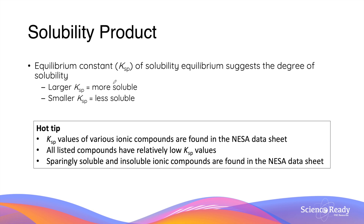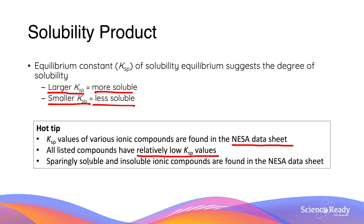Since Ksp depends on the concentration of ions, it can be quickly used to determine whether an ionic compound is soluble or not. The general rule is that ionic compounds with larger Ksp values are more soluble, and those with smaller Ksp values are less soluble. It is important to note that Ksp values are provided in the NESA data sheet, and thus exam questions usually do not provide them nor prompt you to find them. In addition, all Ksp values provided are relatively small, as they are all for either sparingly soluble or insoluble ionic compounds.